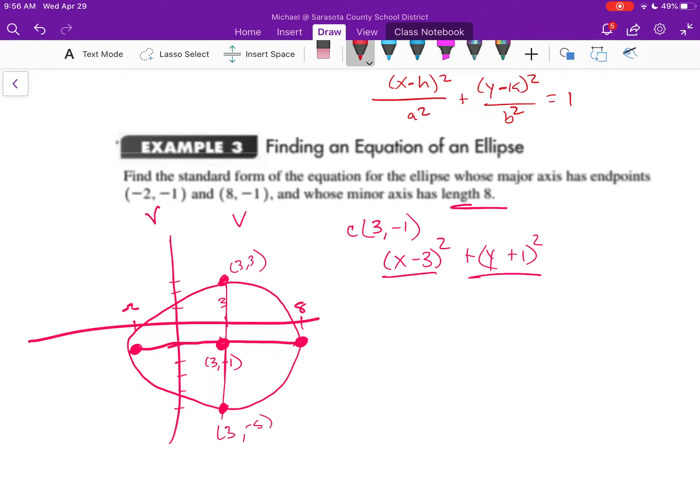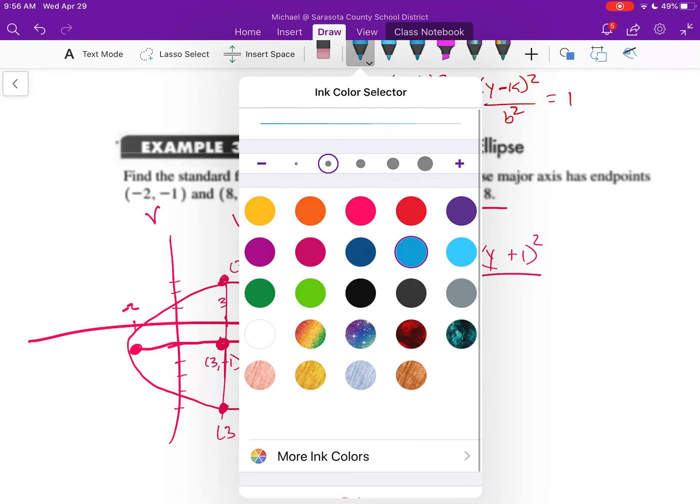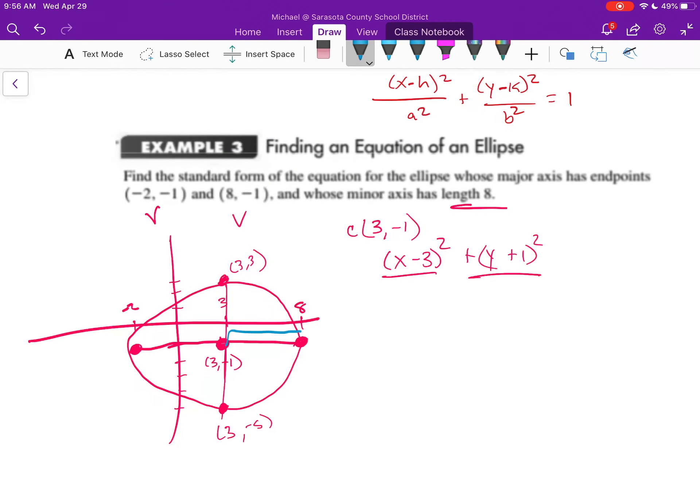All right. So let's find out what that distance from a is. So the distance of a is the distance from the center to the endpoint on the major axis. So that has a distance of 5. So I'm going to have 5 squared down here.